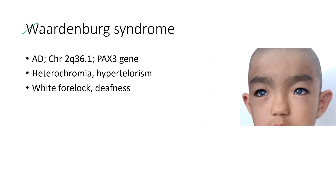Next is Waardenburg syndrome. It is an autosomal dominant condition characterized by heterochromia and hypertelorism. The patient also has white forelock and deafness.